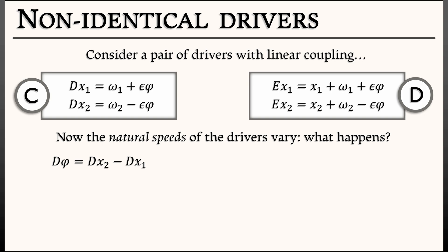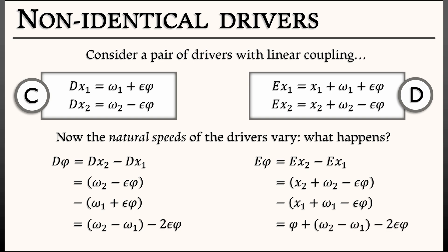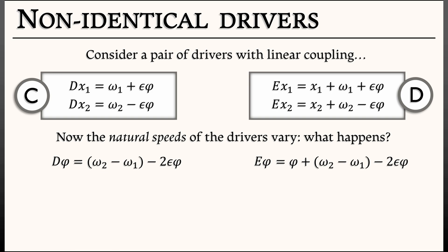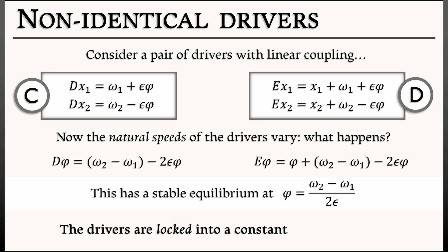Let's do the math. Let's look at φ = x₂ - x₁. In continuous time, we have d φ = (ω₂ - ω₁) - 2ε φ. In discrete time, the system we get is E φ = φ + (ω₂ - ω₁) - 2ε φ. I'll leave it to you to show that this has an equilibrium at (ω₂ - ω₁)/(2ε), and furthermore, it is stable.